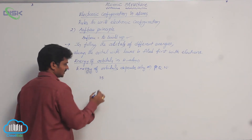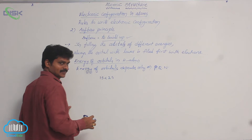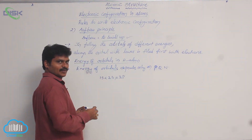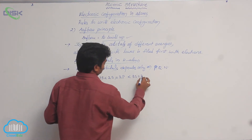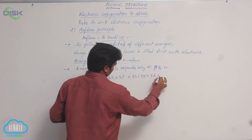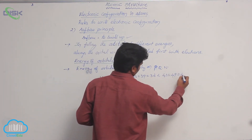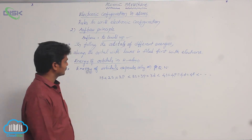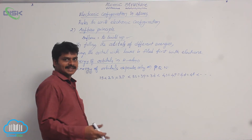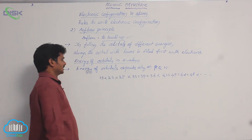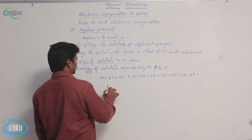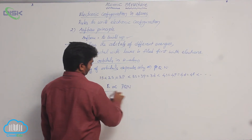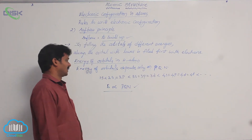For hydrogen atom: 1s has the lowest energy, then 2s has more energy. 2s and 2p are having the same energy. Similarly, 3s equals 3p equals 3d, and 4s equals 4p equals 4d equals 4f. So with increase in the n value, energy increases. The energy of the orbital and the principal quantum number are directly proportional in the case of orbitals of the hydrogen atom.